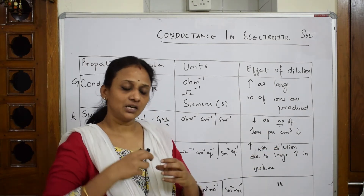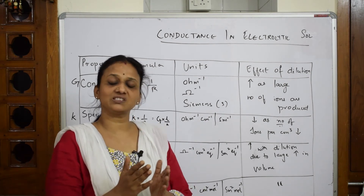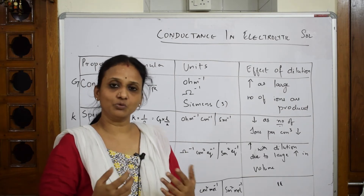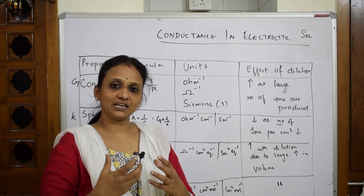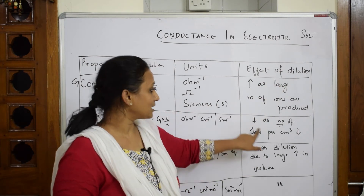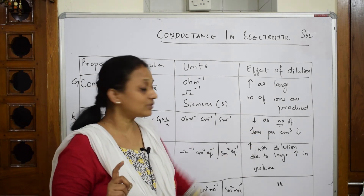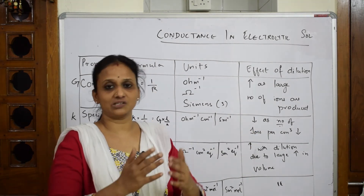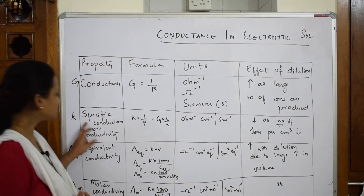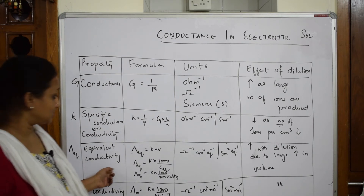When the solution is diluted, the number of ions around that fixed one-centimeter distance and one-centimeter-square area decreases — the ions have moved farther apart. So specific conductance decreases because the number of ions per centimeter cube in that particular area also decreases.